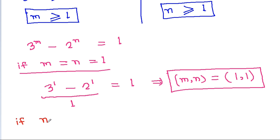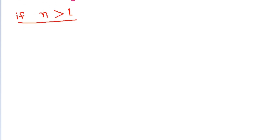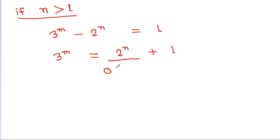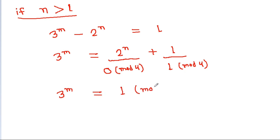Now consider n greater than 1, meaning n ≥ 2. Then 2^n ≡ 0 (mod 4), and since 3^m = 2^n + 1, we get 3^m ≡ 1 (mod 4).